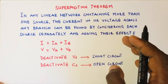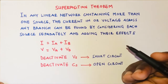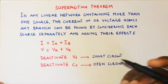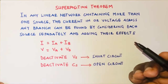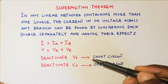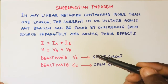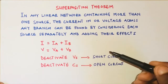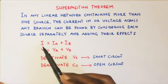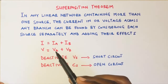Secondly, you need to deactivate the first source and bring back or activate the second source, then solve the problem using the second source. This time we are going to denote the voltage or current components as VB or IB. To find the original current or voltage across that particular branch, we add the components: IA plus IB for total current, and VA plus VB for total voltage.